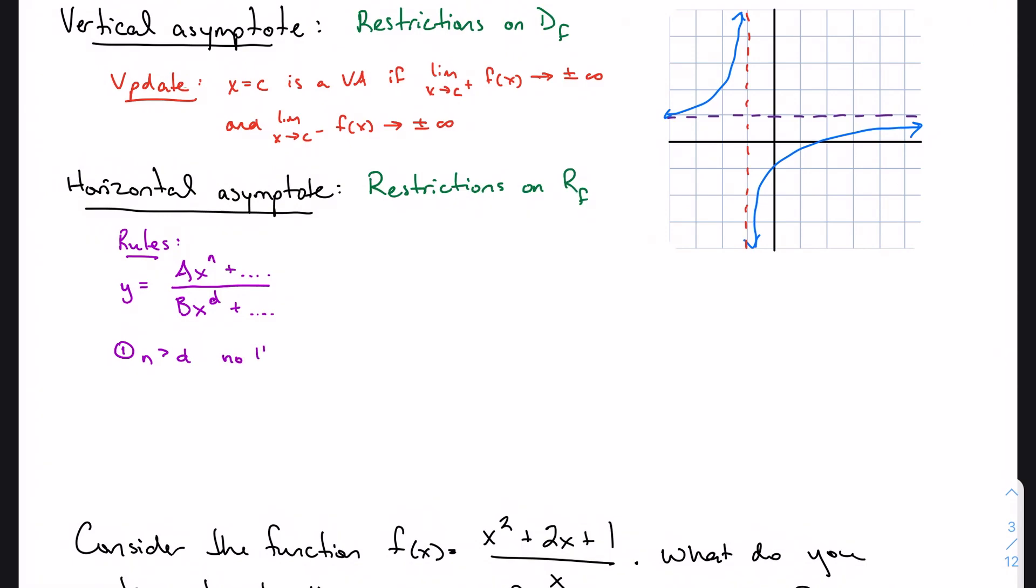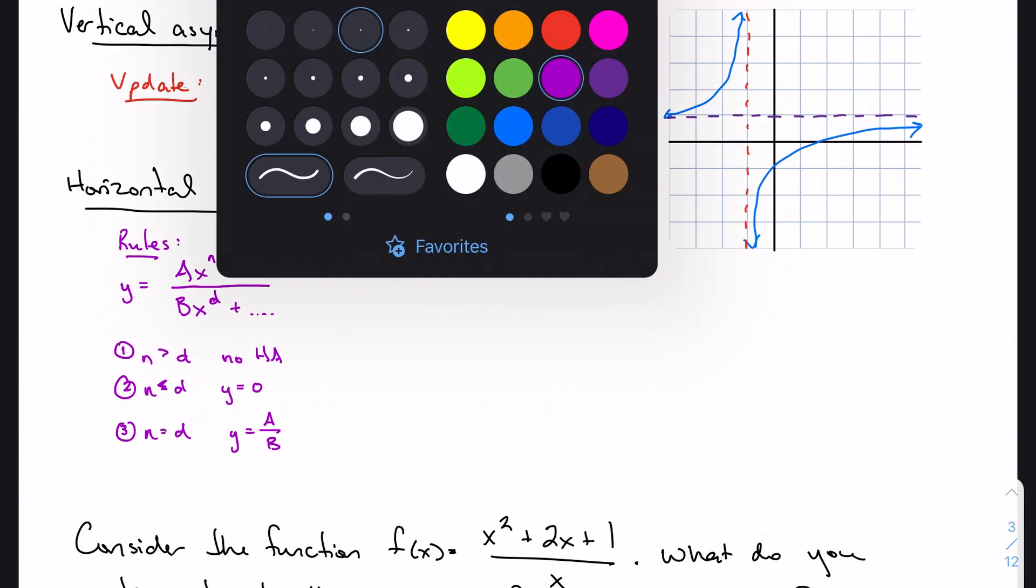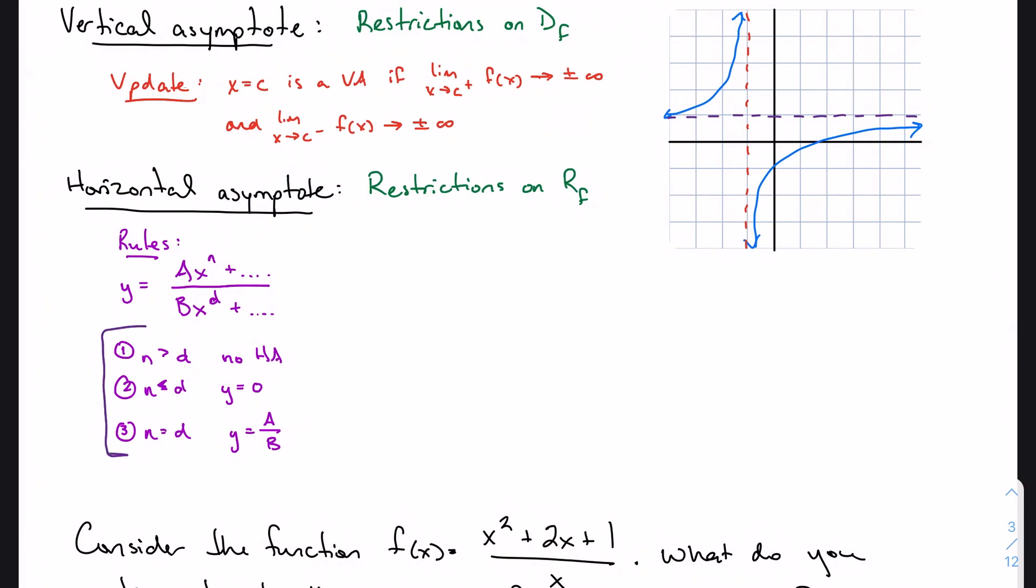We had compared n and d and got a whole bunch of sets of rules. If n was greater than d, there were no horizontal asymptotes. If it's less than, there's a horizontal asymptote at zero. And if they were equal, then we took the ratio of the leading coefficients, and that became our horizontal asymptote. These are still super important, and I would never tell you to ignore these.